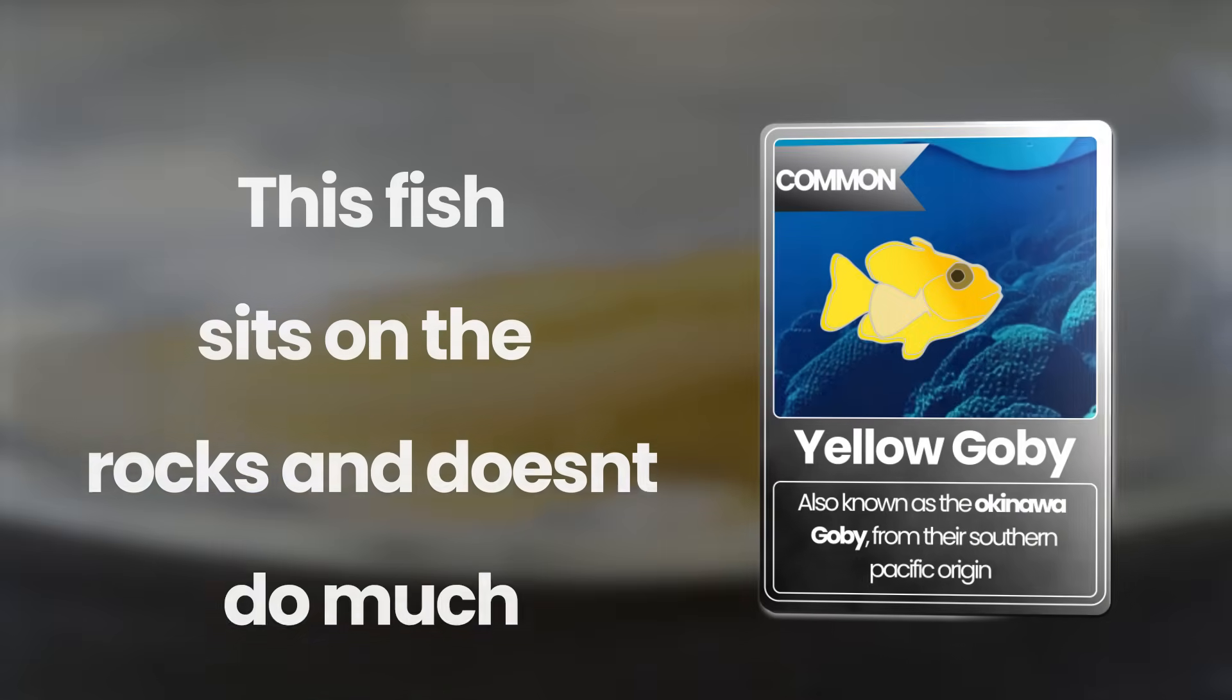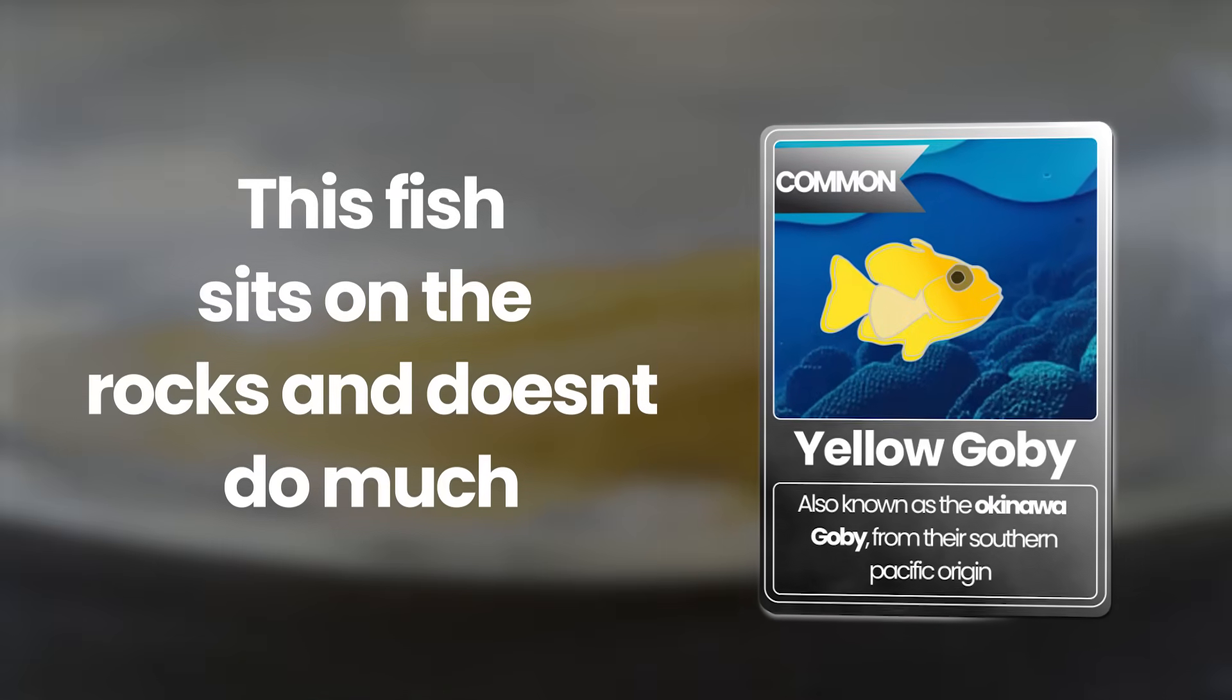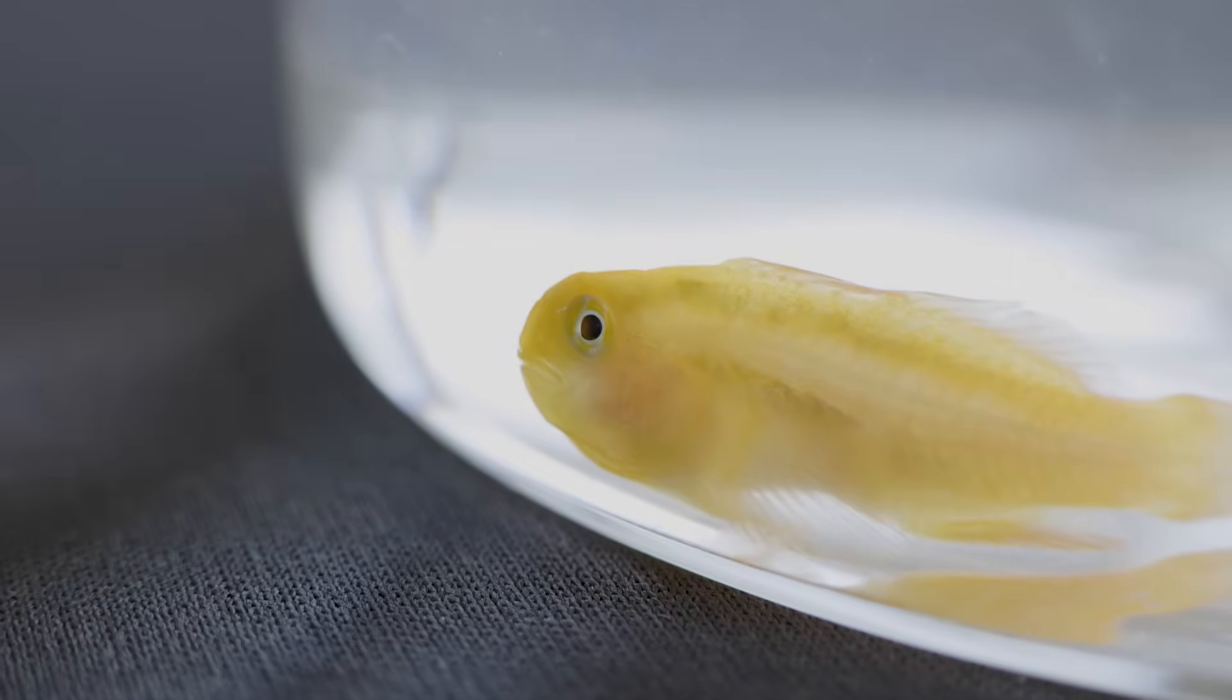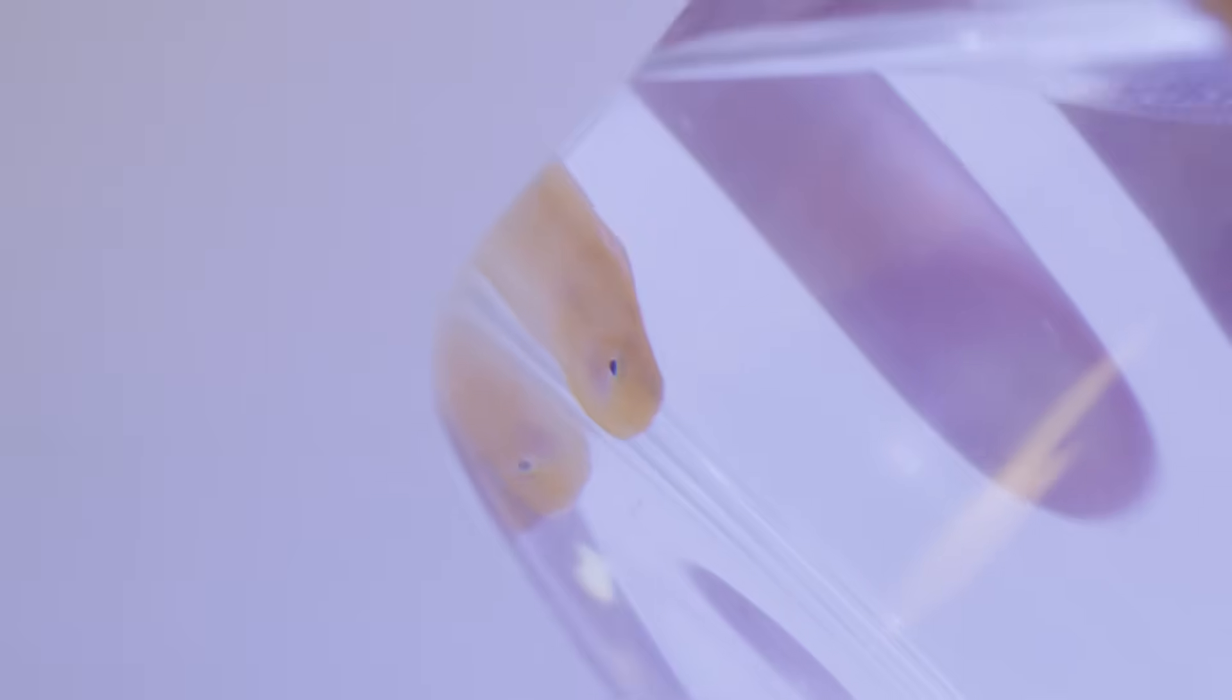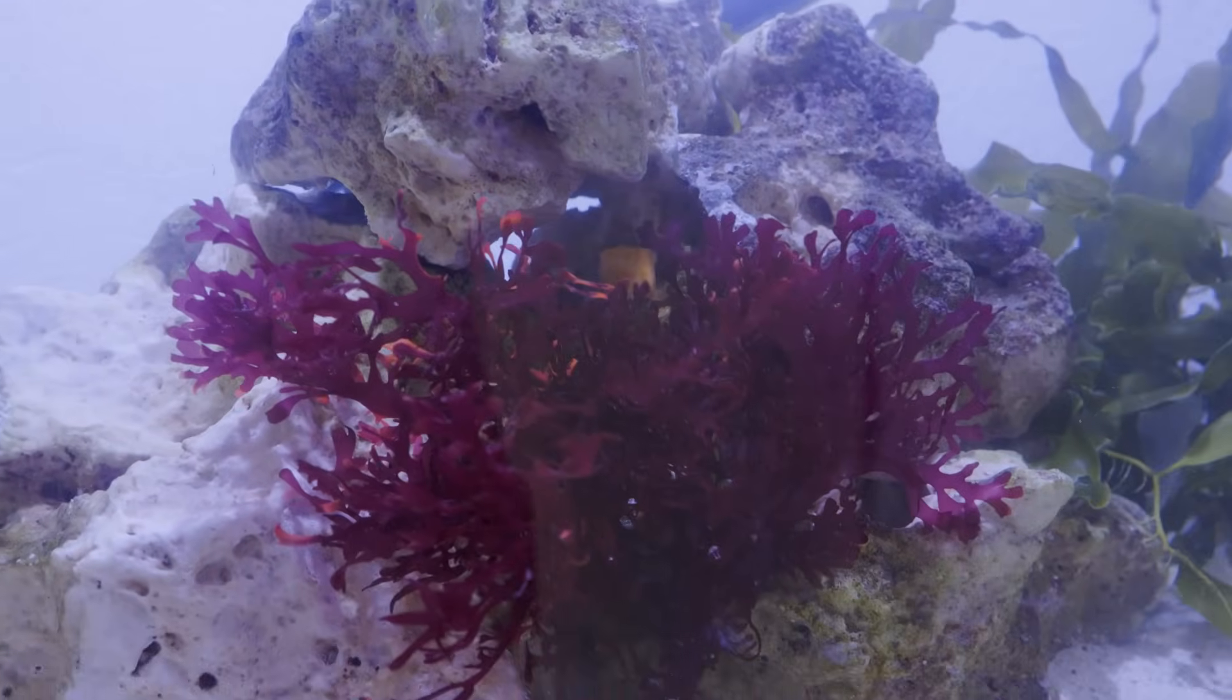These awkward little rock dwellers come from the eastern coastlines of the Pacific Ocean, from the Great Barrier Reef that spans the eastern coast of Australia, right up along the Philippines and as far as the southern islands of Japan, which is where they get the nickname the Okinawa Goby. We acclimatized them and added them in over the rocks so they had something familiar to swim to.